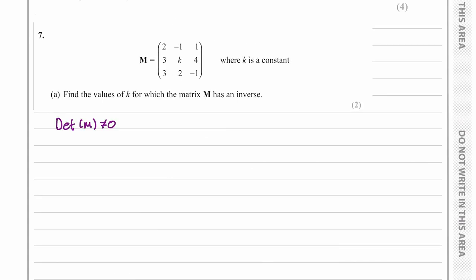So all we need to do is to find the determinant of this matrix. So we'll have two times the determinant of this matrix, negative one with this matrix, and the one with this one.